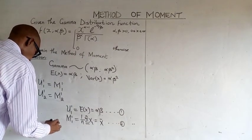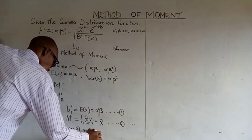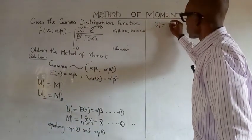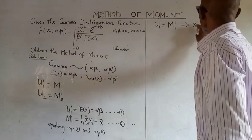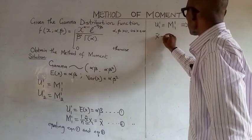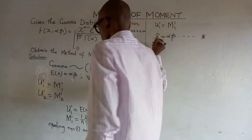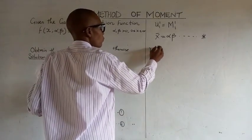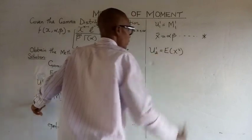Equating equation 1 and equation 2, we have that mu 1 is equal to m 1, which implies that x bar is equal to alpha beta. That is to say, x bar is equal to alpha beta. For the second moment, we have mu 2, which again we will equate to the second sample moment.